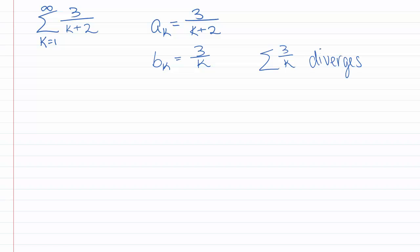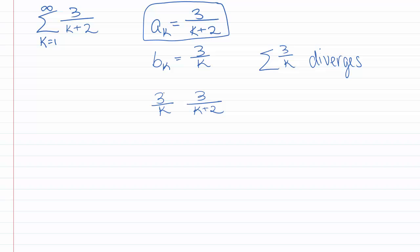If we want to compare that with 3 over k plus 2 and show that 3 over k plus 2 diverges, it would have to be bigger than 3 over k. Unfortunately, this isn't actually true. When we add 2 to the bottom, we are making the bottom bigger, which makes the fraction smaller. So 3 over k plus 2 is, in fact, smaller than 3 over k. So we want to find a different b sub k to compare with a sub k.